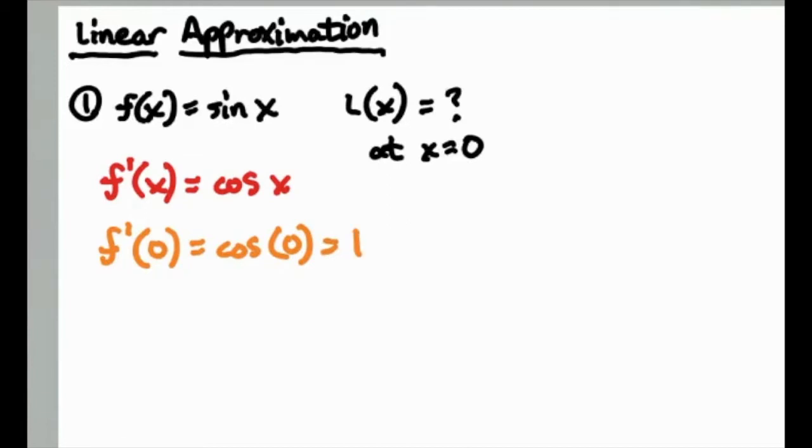So you know that your line is going to be something like y equals, I should do l of x equals, it'll be l of x is equal to 1x plus b. Okay, now you need to figure out what that b is. Well, we know the x is 0, so this is going to be 0 plus b.